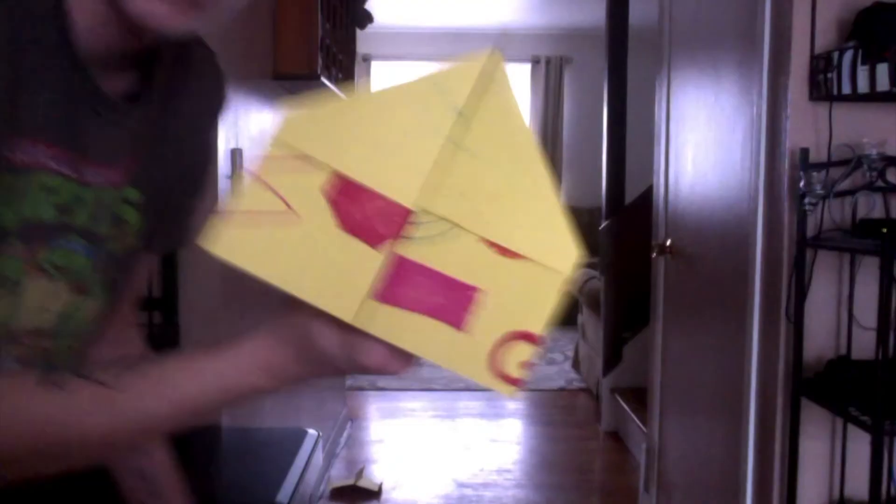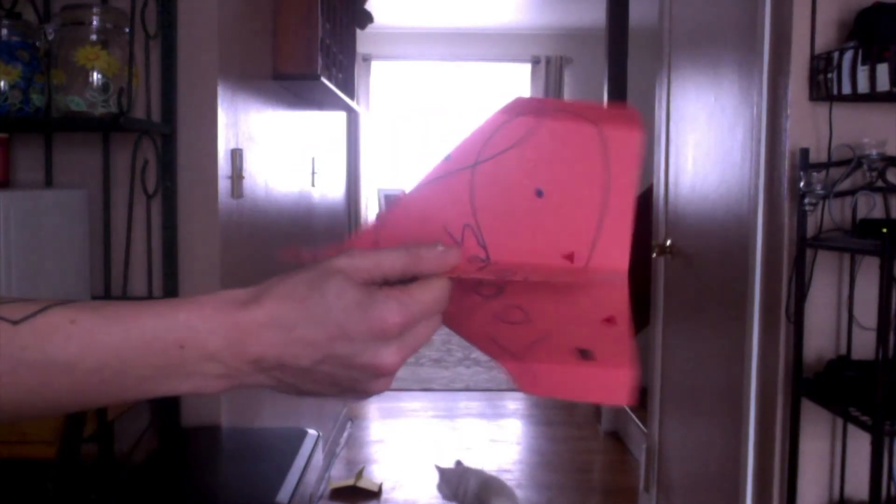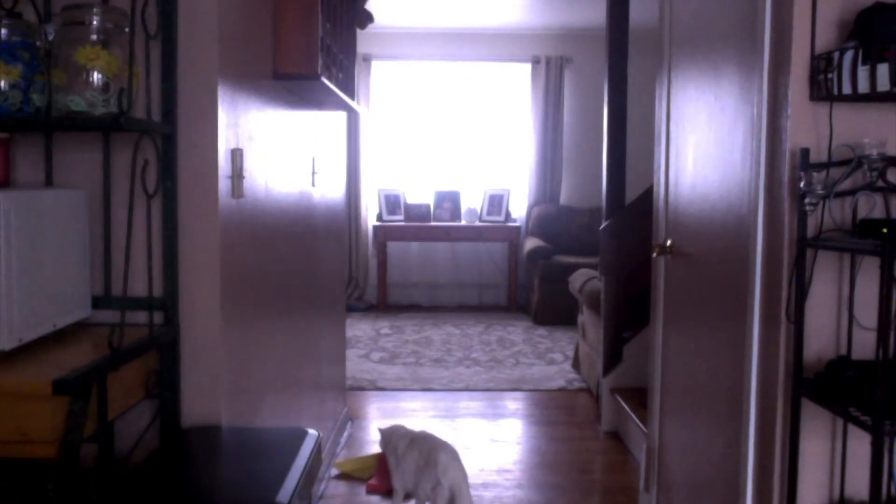First, we'll throw this one. The one that we did not color on. Okay, ready? Oh, it crashed. It didn't go very far, did it? Okay. Let's try the yellow one we drew together. Ready? It didn't go very far either, but it did some flips. Ready? Let's try the last one and then we'll do it again. See if we can get one on that rug. None of them flew down the hallway.